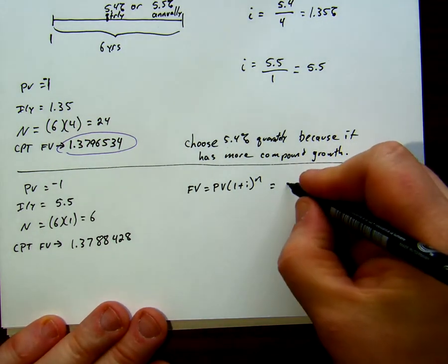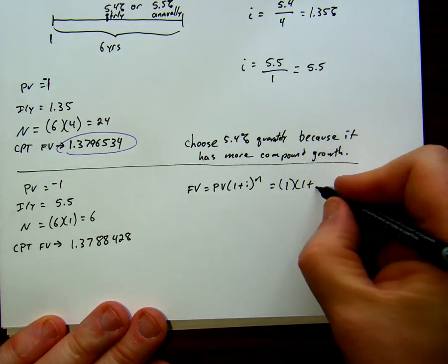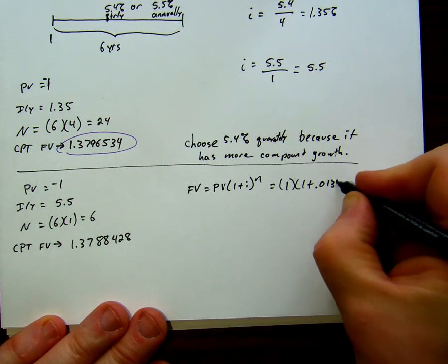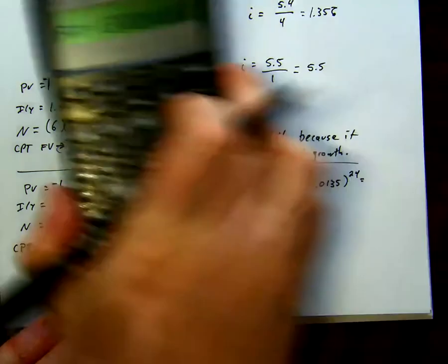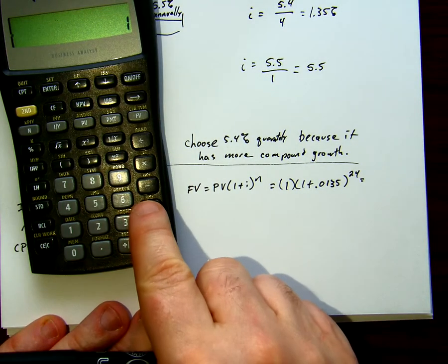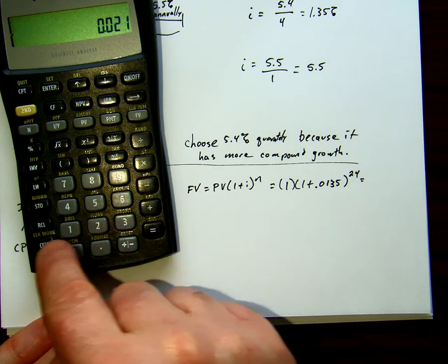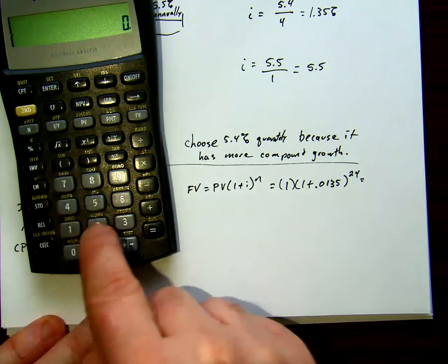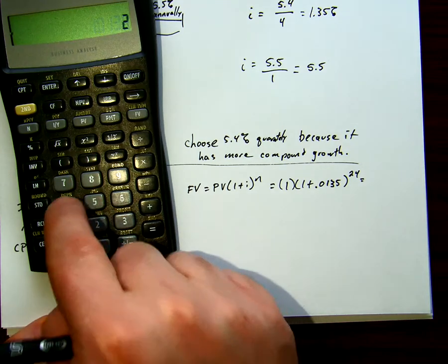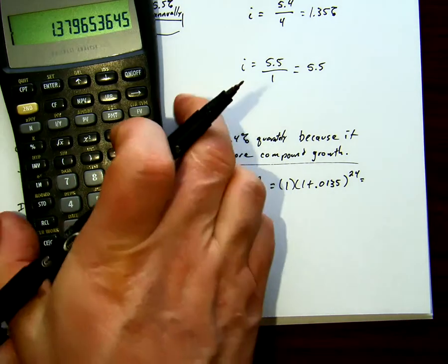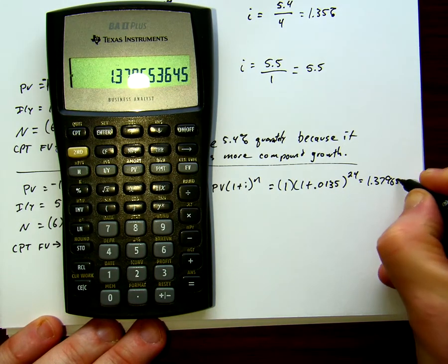Our future value is present value times 1 plus i to the n. This is equal to, well, our present value is 1, times 1 plus 0.0135 to the 24. So, this is 1 times 1 plus 0.0135 exponent 24, gives us exactly the same values as what we had before, 1.37965.